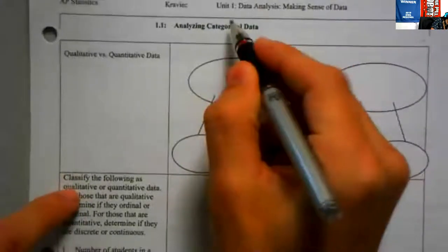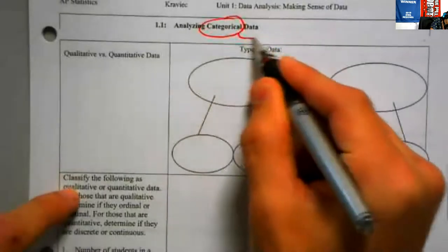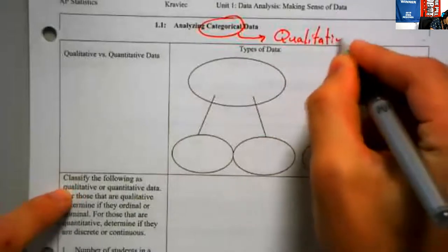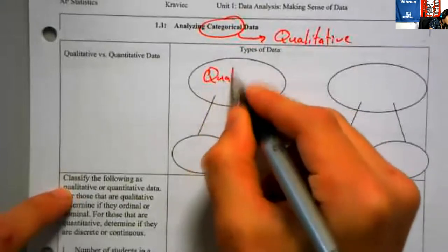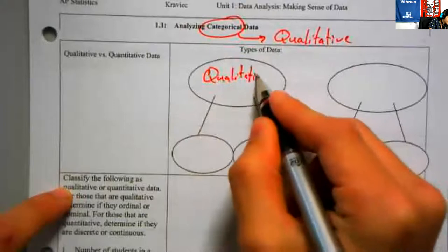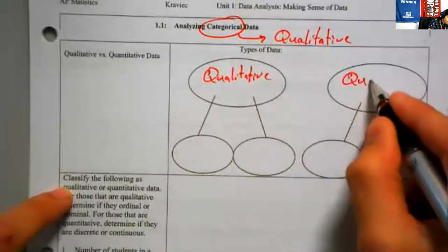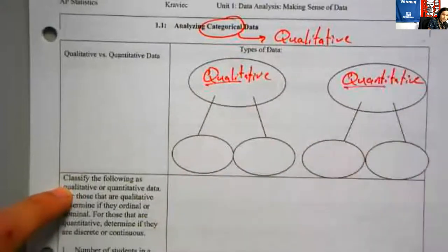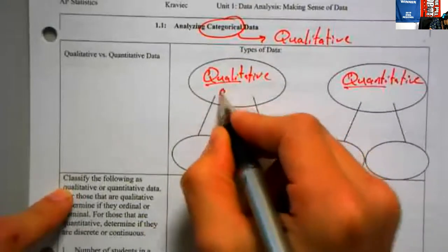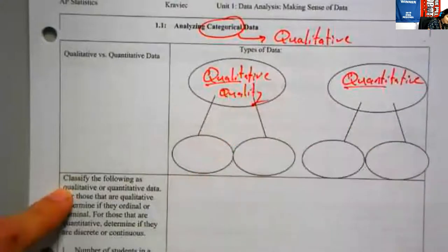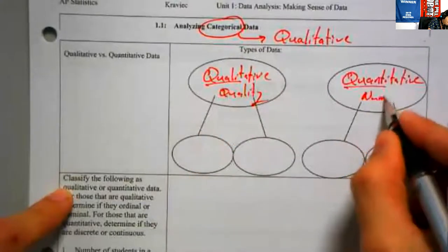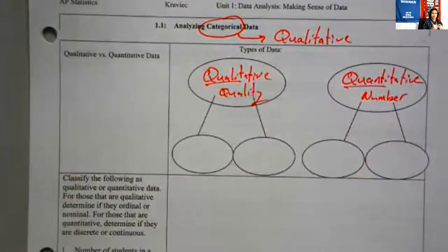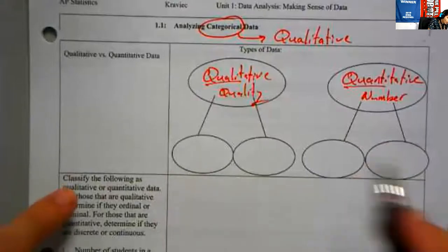Analyzing this word up here, categorical data. Categorical data is sometimes called qualitative data. So we've got two types of data today. We're going to deal with largely qualitative. We're also going to have a data called quantitative, and there's some nice roots that we can see at the start of those two words. Quality, some characteristic, quant, that would be some number.